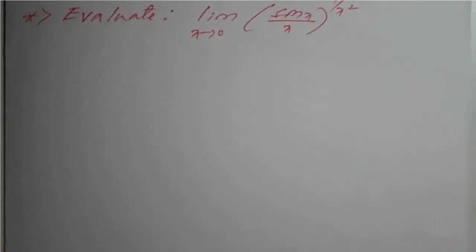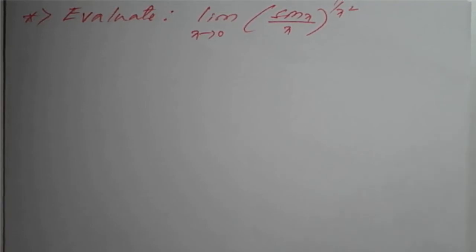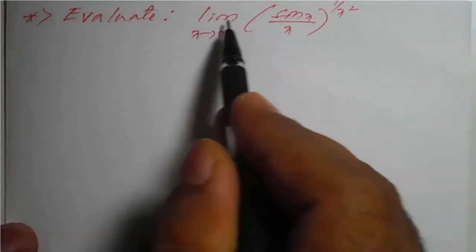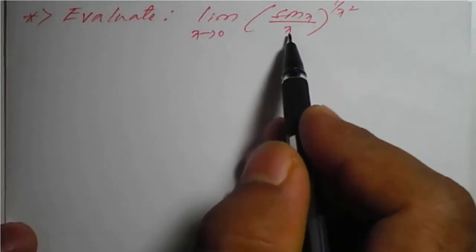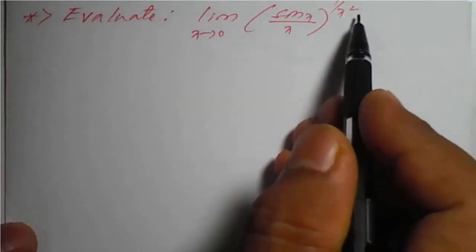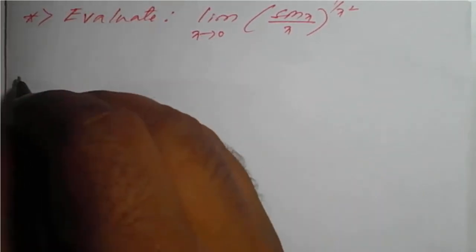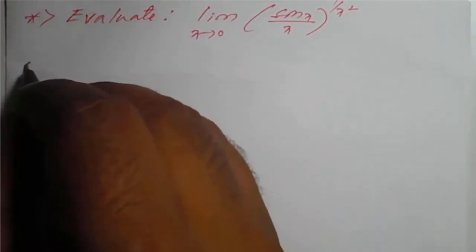Hello students. We will see a problem based on limits. The problem is: limit of (sin x divided by x) raised to 1 upon x squared, as x tends to 0. The solution.